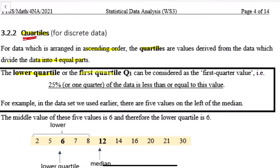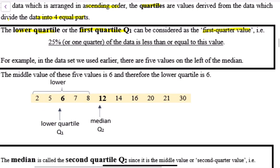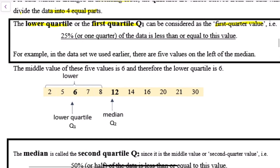The lower quartile or first quartile Q1 is the value where twenty-five percent of the data is less than or equal to that number. So first quartile means twenty-five percent or less of the data. Let's see how we can use this.